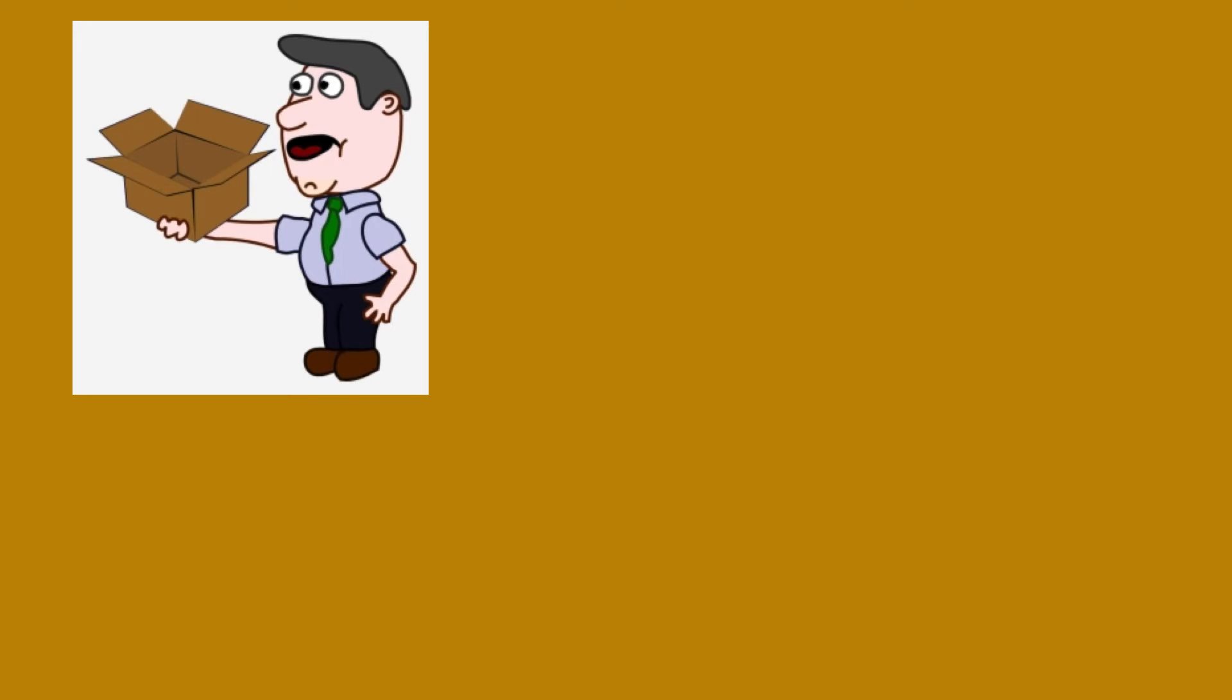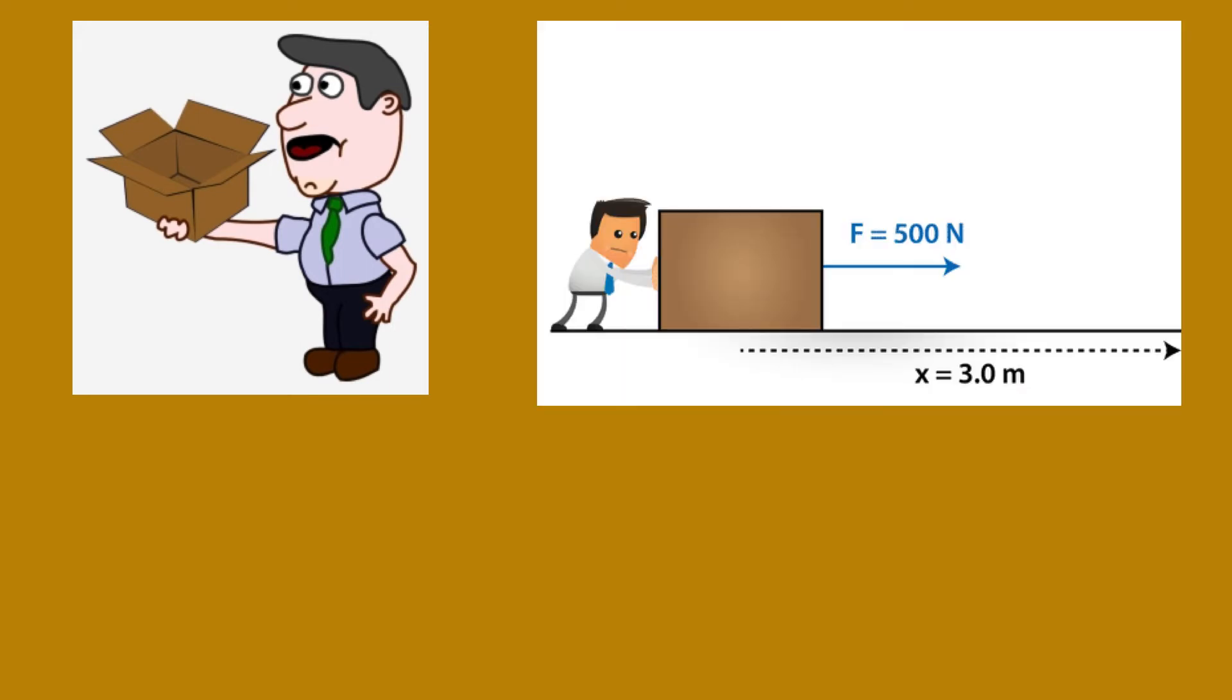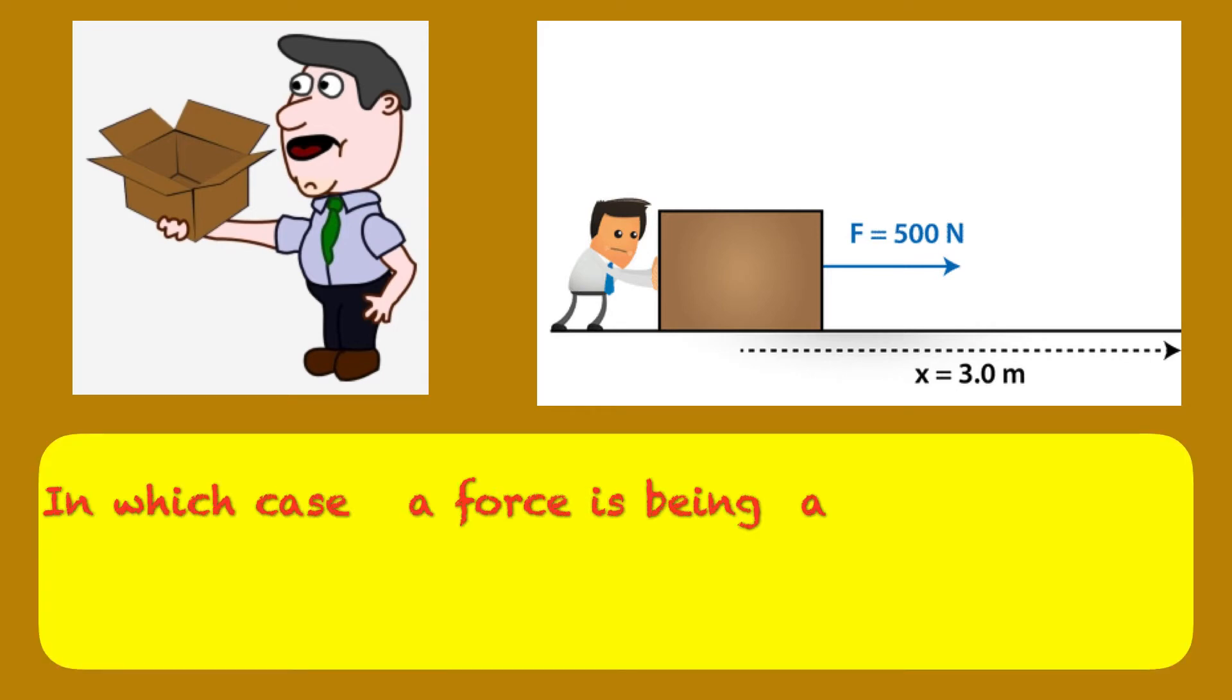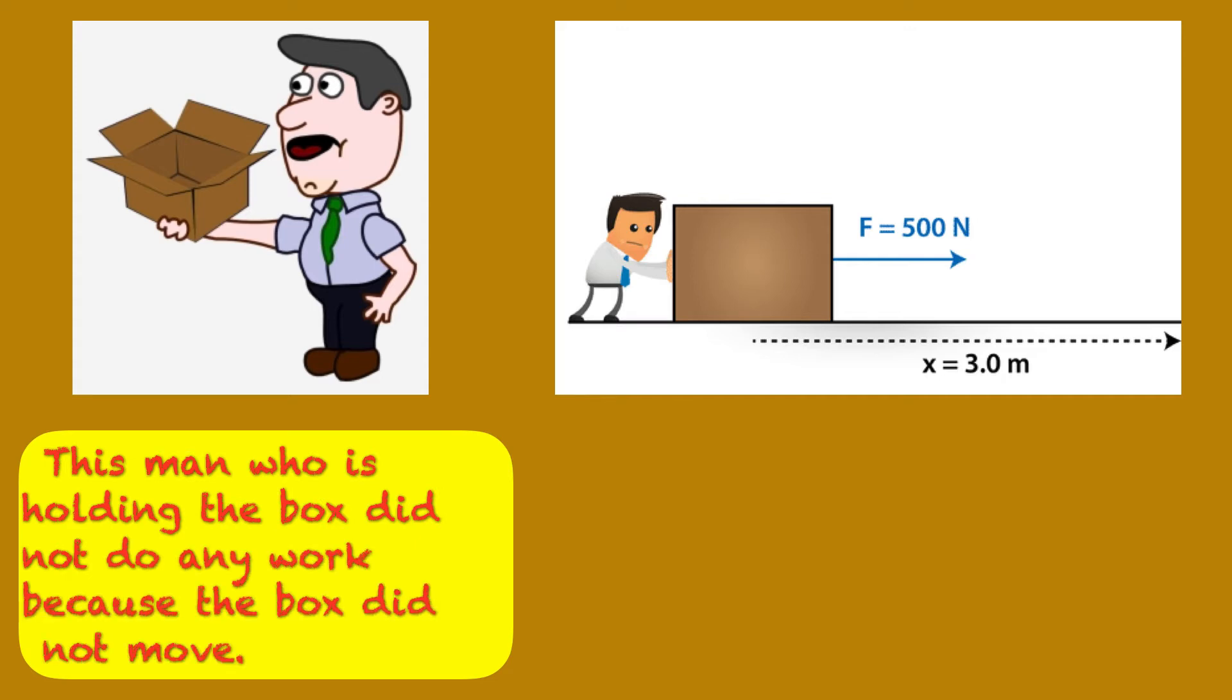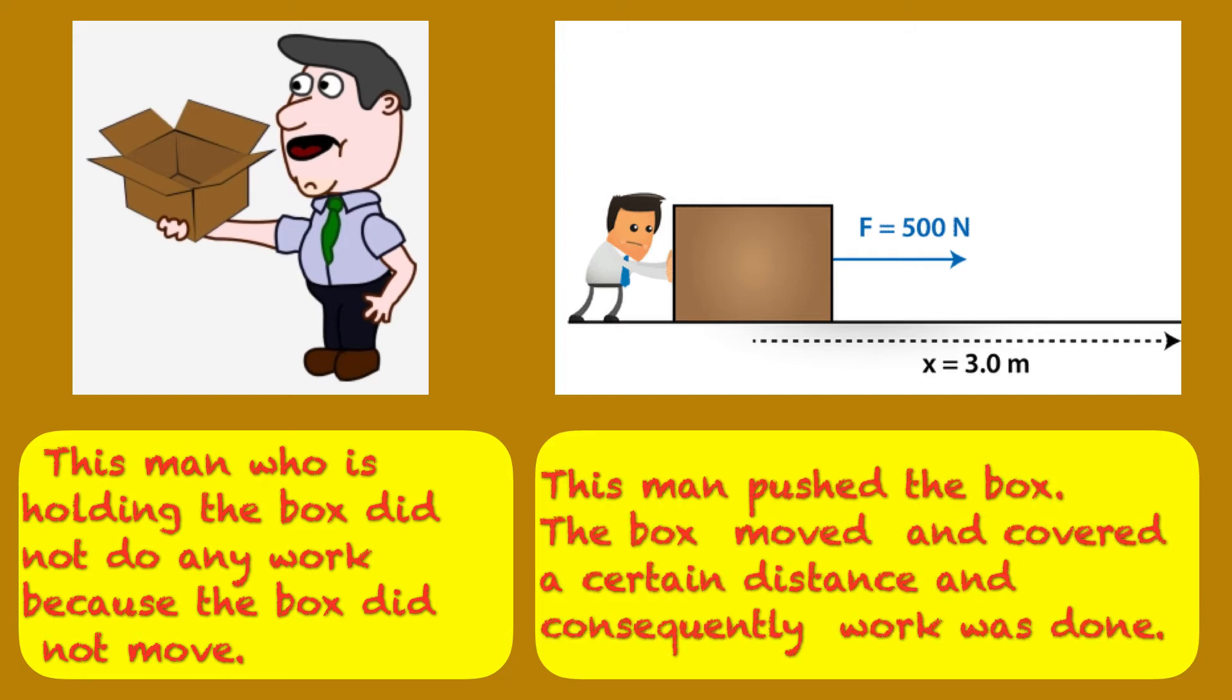Now, let's check your understanding. The first picture shows a man who is holding a box and the second shows a man who is pushing a box. In which case a force is being applied? In which case work is done? It is clear in both cases that a force is applied. But the man who is holding the box did not do any work because the box did not move. While in the second picture, the man pushed the box and the box moved and covered a certain distance. And consequently, work was done.